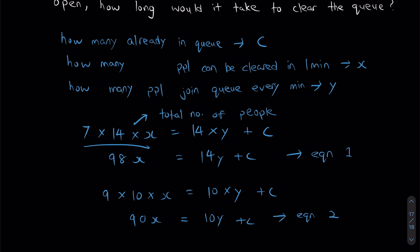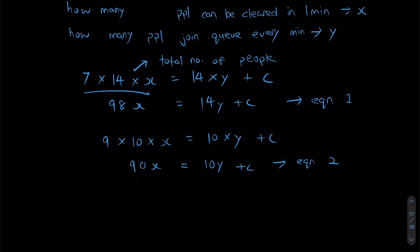So as with most simultaneous equation questions, what I should do now is try to get rid of some unknowns. How do I do that? In this case, I'm going to take equation one minus equation two. So 98X minus 90X, that gives me 8X. 14Y minus 10Y, that gives me 4Y. And C minus C, they cancel each other out.